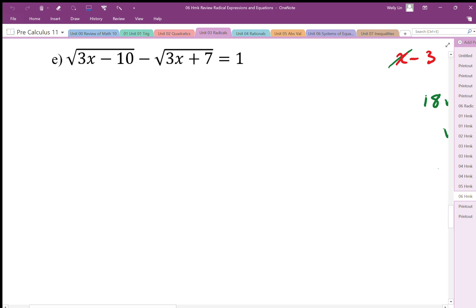We're going to take that minus square root, and we're going to put it to the other side so we can isolate the 3x minus 10 square root. And we're going to get rid of this square root first.